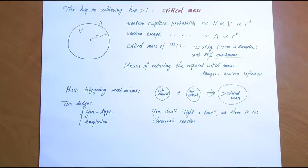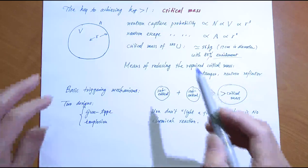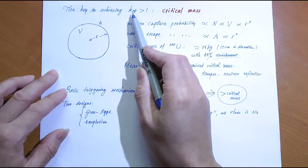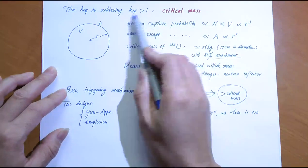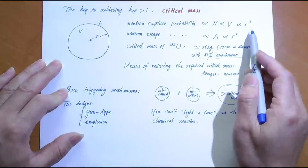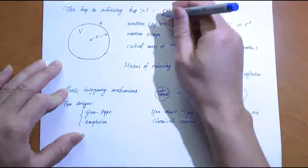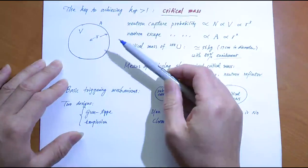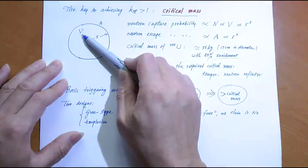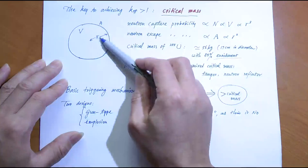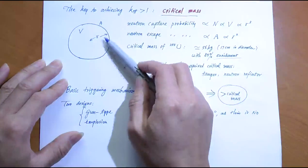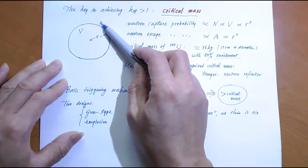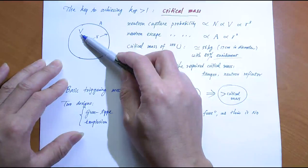Suppose you have enough enriched fissile material. How do you detonate an atomic bomb? The key is to achieve supercriticality, meaning the k-factor is greater than 1. The key idea is the critical mass. Consider a sphere of U-235 with radius r: surface area scales as r², volume scales as r³. When you double r, area grows by a factor of 4 but volume grows by a factor of 8 — volume grows faster than area.